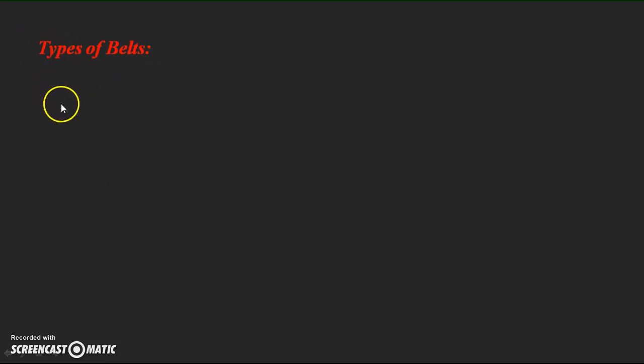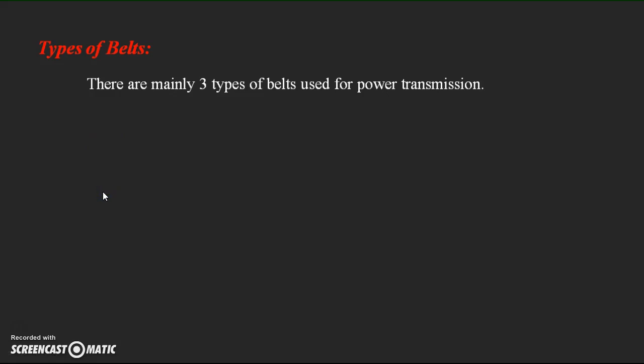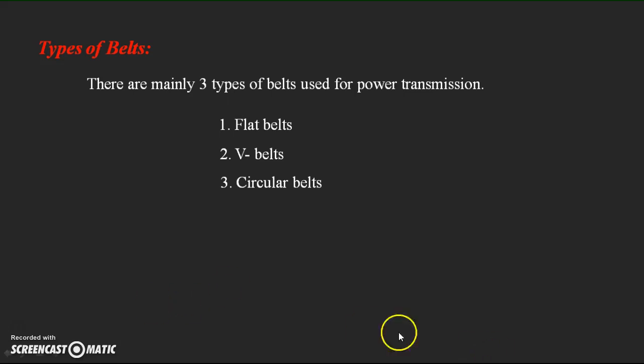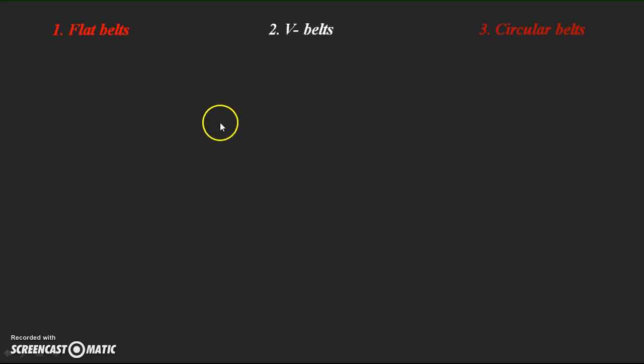Next, let's discuss the classification of belts — the types of belts arranged over the pulleys. There are mainly three types of belts used for power transmission. The first is the flat belt, the second is the V belt, and the third is the circular belt. These different cross-sections are given to the belt to transmit power — high power, low power, and moderate power — based upon the amount of power required.